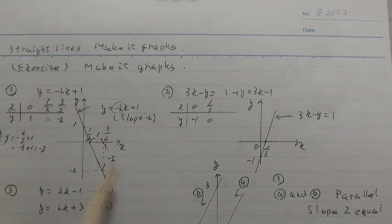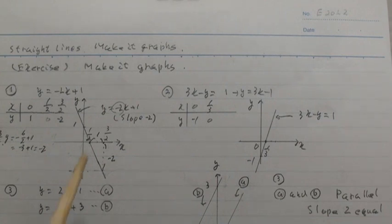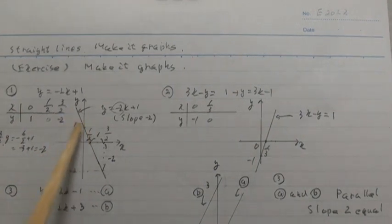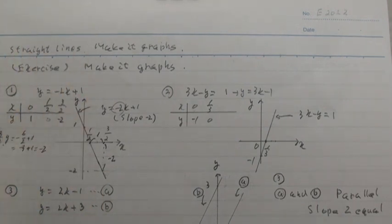And plot the points. x equal 0, y equal 1. And x equal 1 over 2, y equal 0. Y-intercept and x-intercept. And this straight line equation: y equal minus 2x plus 1.